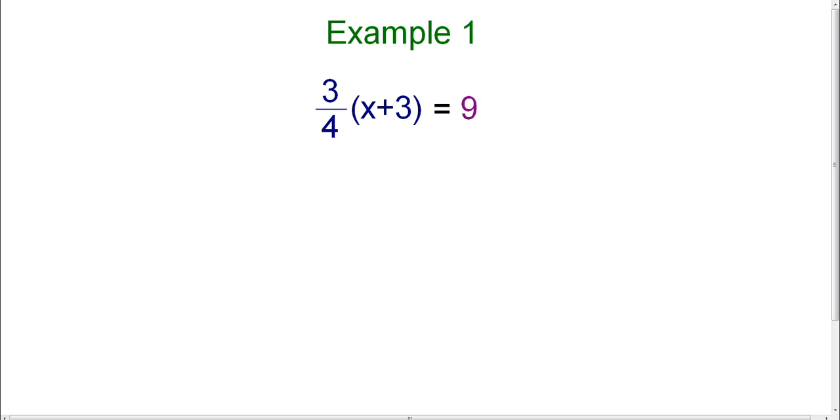We have one fraction, which is 3/4, times the quantity x plus 3 equals 9. I've color-coded it to show you that on the left-hand side, we have just one term: 3/4 times the quantity x plus 3. This is all one term because there's no plus or minus sign separating terms.